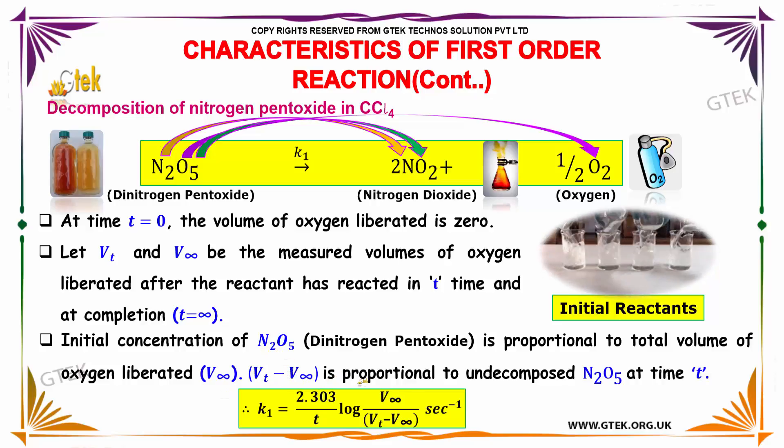Vt minus V∞ is proportional to undecomposed nitrogen pentoxide at time t. So K1 equals 2.303 by t, log V∞ divided by (V∞ minus Vt), per second.